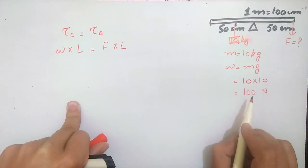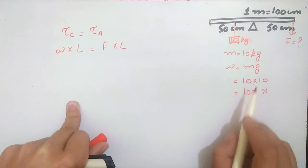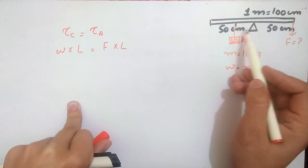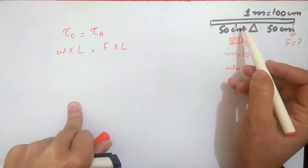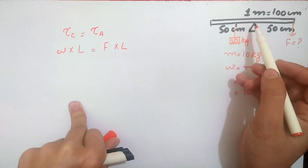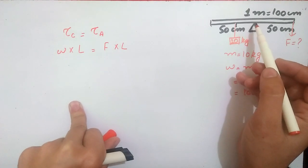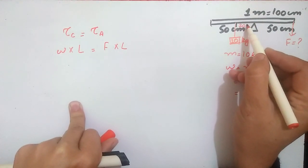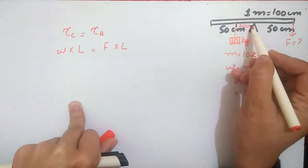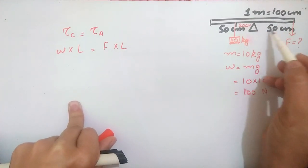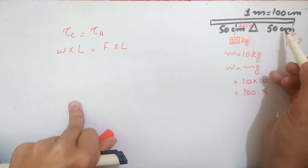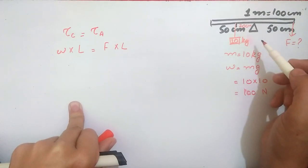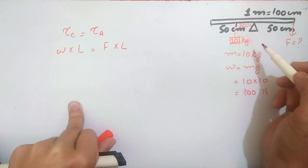Now on one side, the weight is 100 N. The distance from the center is 20 cm, which in meters is 0.2 meters. On the other side, the distance is 50 cm. You need to convert all lengths to meters.